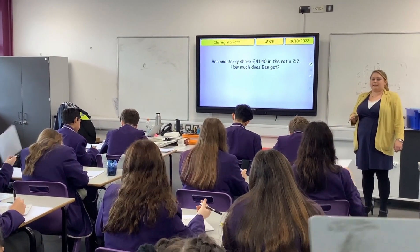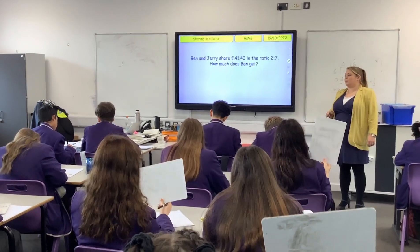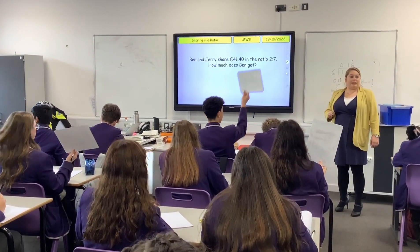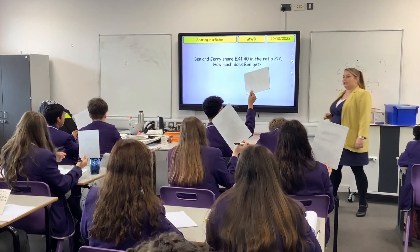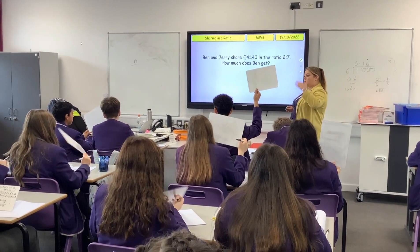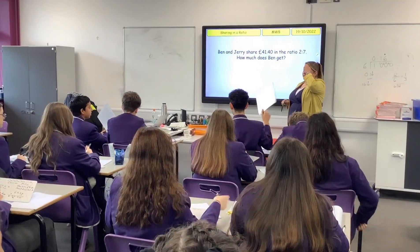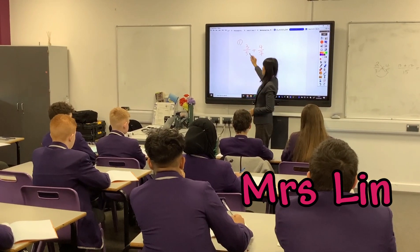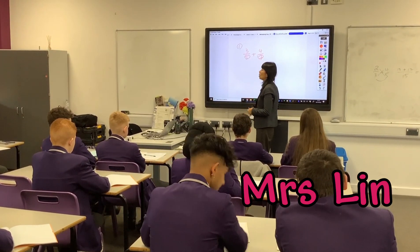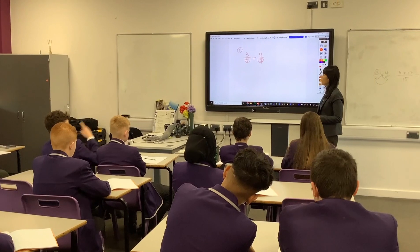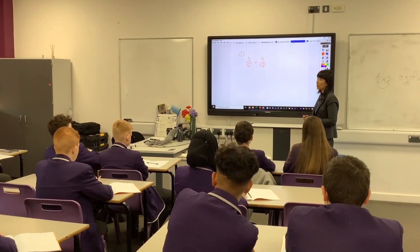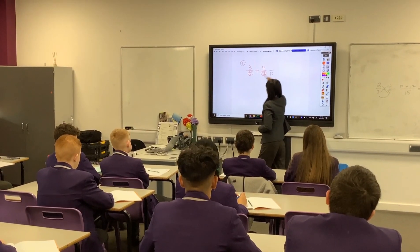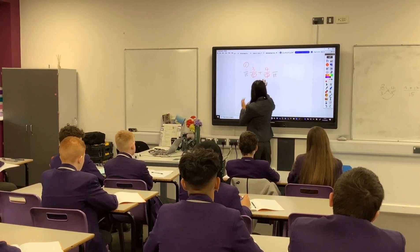Show me your answers please. I've got lots of similar answers. Some people need to look — come down and look this way. What you need to do now: you've got 5 and you've got 7. What is the lowest common multiple of 5 and 7? 35. Well done. So I'm going to change that into 35 and write it next to it so it's easy for you to see.